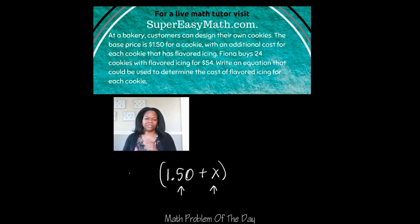Now I'm going to say multiply that by 24 because the problem explained that Fiona buys 24 cookies with flavored icing. So we need to take that scenario of $1.50 plus the icing cost, add it together and then multiply it by 24 because she did it 24 times because she bought 24 cookies.